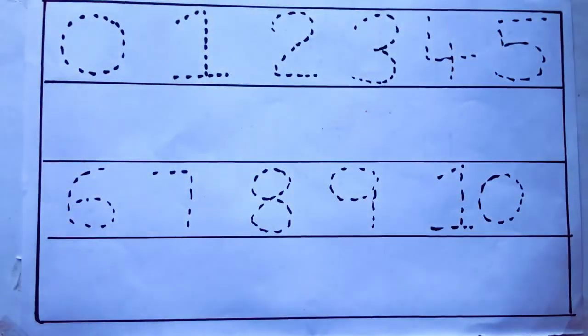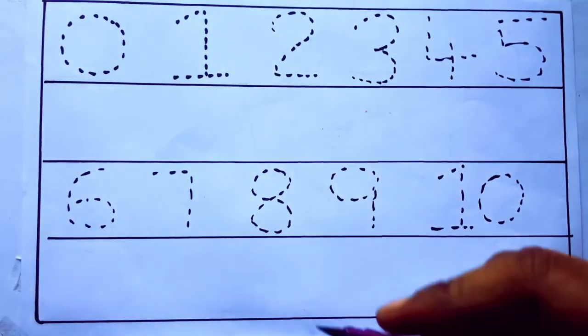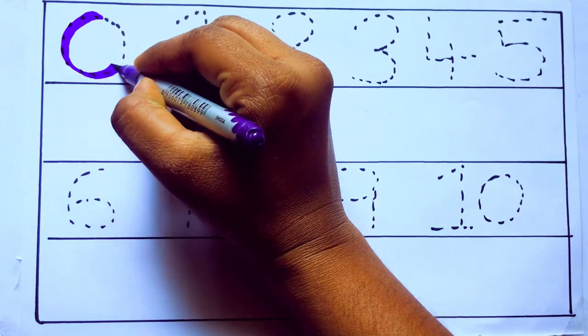Let's draw numbers. Violet color, 0. Z-E-R-O.